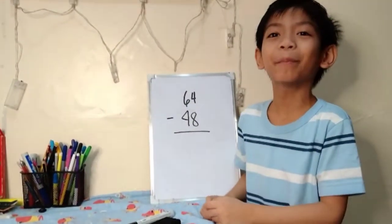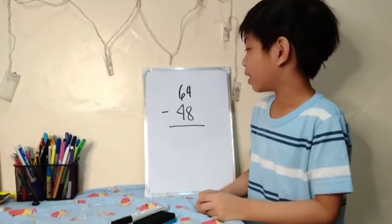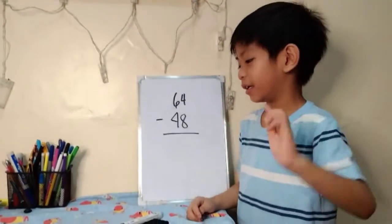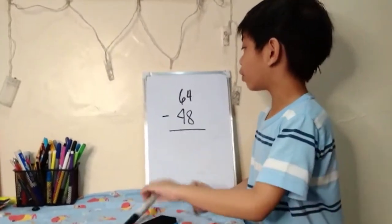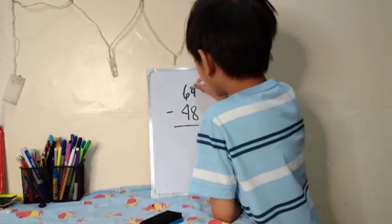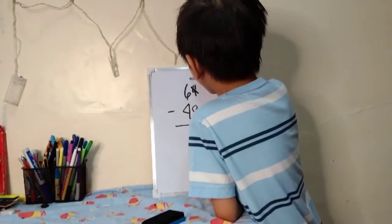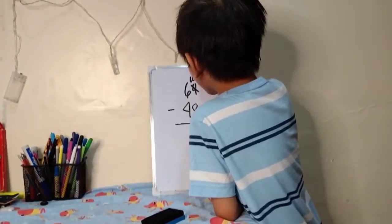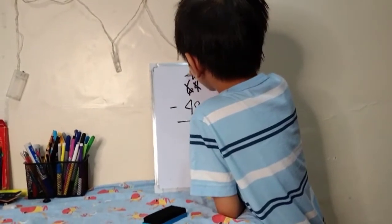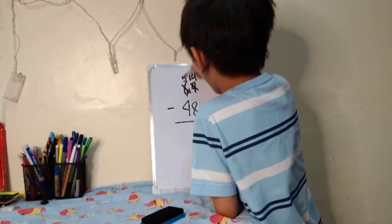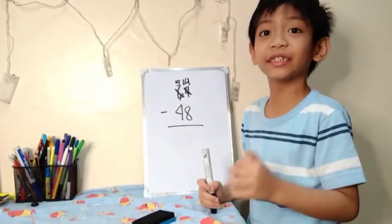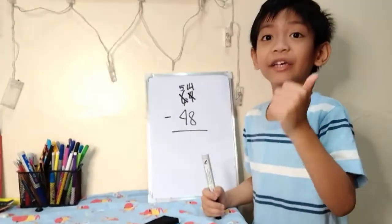Another example. 4 minus 8 — so, we're going to borrow 1 from 6. It's going to be 14. And 6 is going to become 5. 14 minus 8 is...